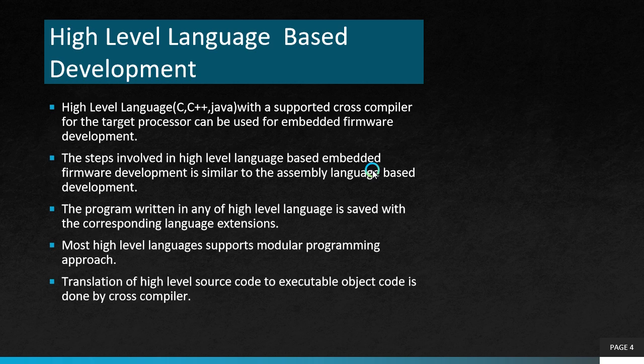The program written in any high level language will be saved with the corresponding language extension, like .c for C or .cpp for C++, etc. We can use any text editors like Notepad, Wordpad, or any text editors provided by an IDE tool for writing the program. Most high level languages support a modular programming approach, hence multiple source files will be considered as modules. The source files corresponding to each module are represented by a file with the corresponding language extension, and the translation of high level source code to object code is done by a cross compiler.